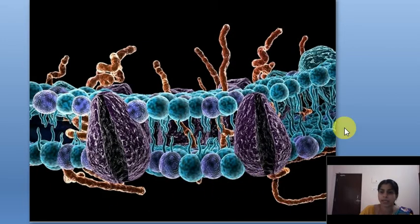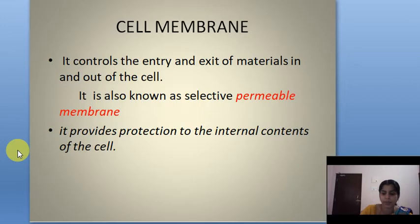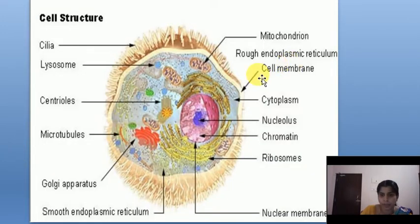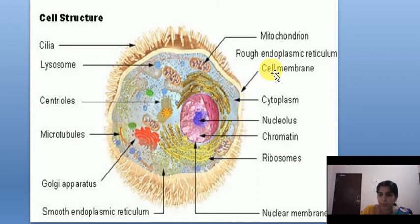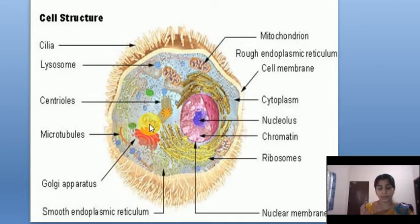Next we discuss cytoplasm. Cytoplasm is the substance found between the plasma membrane and the nuclear membrane. It is a jelly-like substance that contains a variety of small structures known as cell organelles — lysosomes, centrioles, microtubules, Golgi apparatus, smooth and rough endoplasmic reticulum, ribosomes, chromatin, nucleus, and mitochondria. Each of these organelles carries out different functions and reactions.